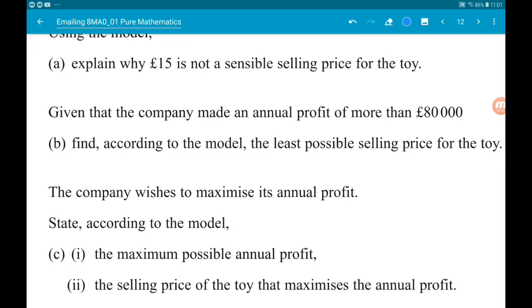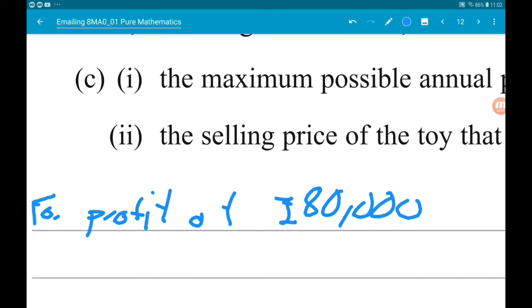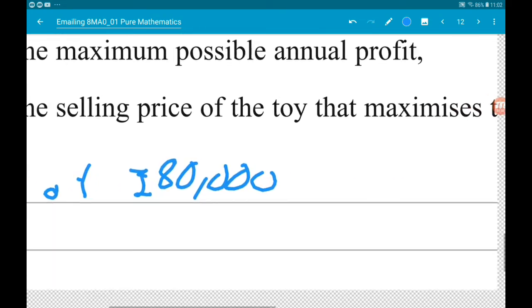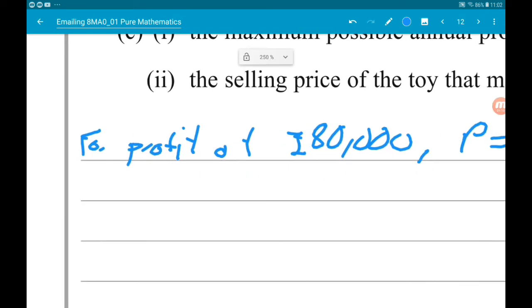And then to make more than 80,000 pounds, we know that our selling price has to be just more than what we find. So for profit of 80,000 pounds, now remember that p in the model represents thousands of pounds. So we need p to equal 80. So in other words, in terms of our model...